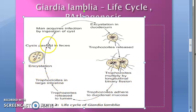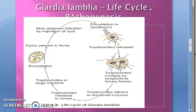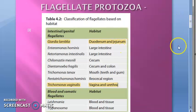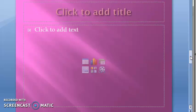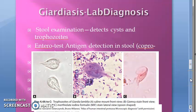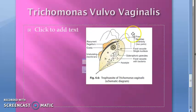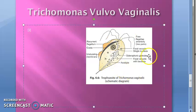Cysts are passed in feces. The habitat is the duodenum and jejunum, which are parts of the small intestine — specifically the initial part of the small intestine. Then we will read about the lab diagnosis of giardiasis.